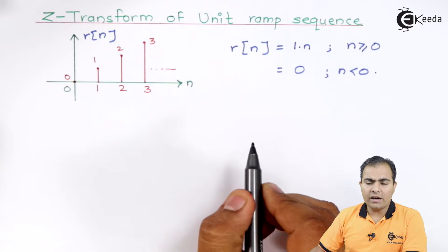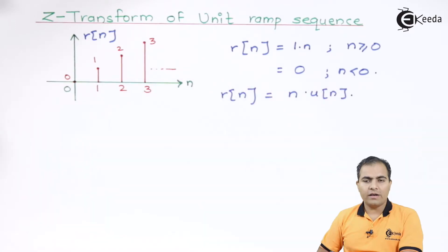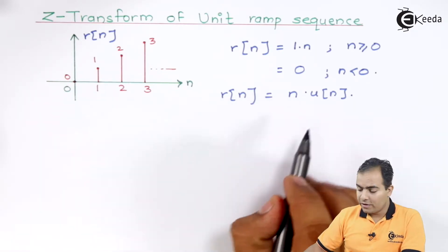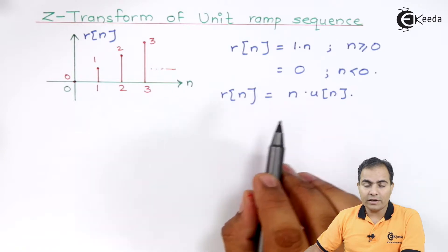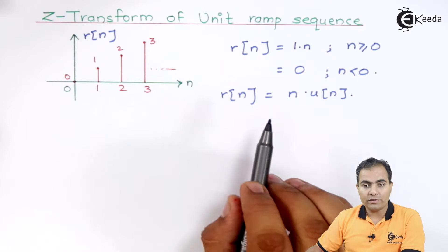Basically, we can write this R of n value by n into u of n. You can represent this R of n by n into u of n. Why I have written this formula? Because we are going to find out z transform and we can find out z transform by using this equation.